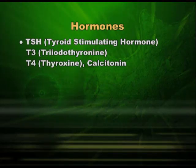TSH from the anterior pituitary, the thyroid stimulating hormone, acts on the thyroid and makes it produce thyroid hormones namely T3, T4, and calcitonin. T3 is triiodothyronine and T4 is thyroxine, which looks after BMR, the basal metabolic rate. T3 is the mother substance for T4.